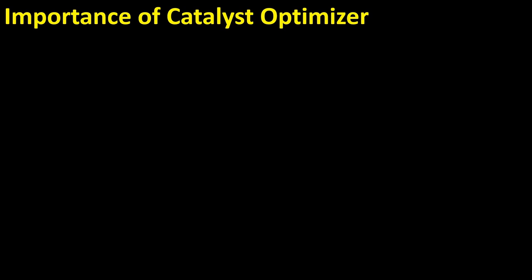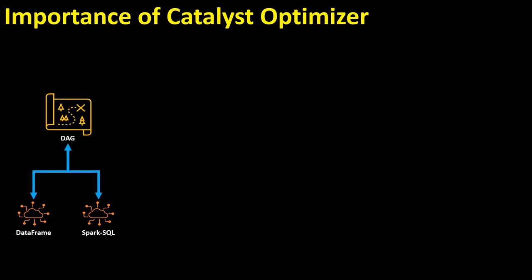How does Spark balance the job? We are going to talk about the Catalyst Optimizer and Explainer. First, you submit a job and you submit a DataFrame in Spark SQL. If you get the DAG, you will get the plans.